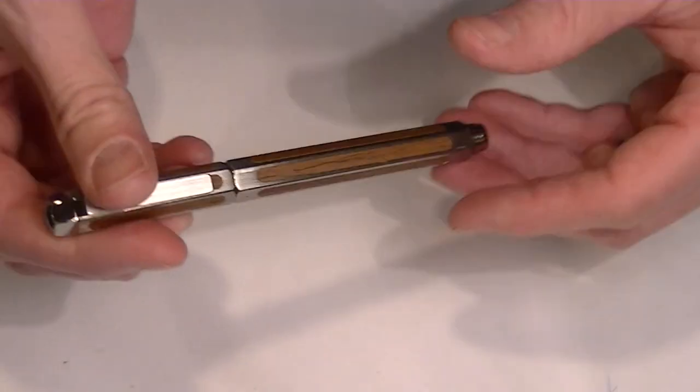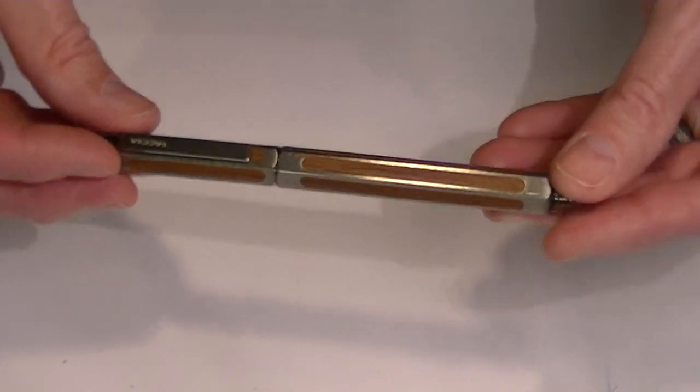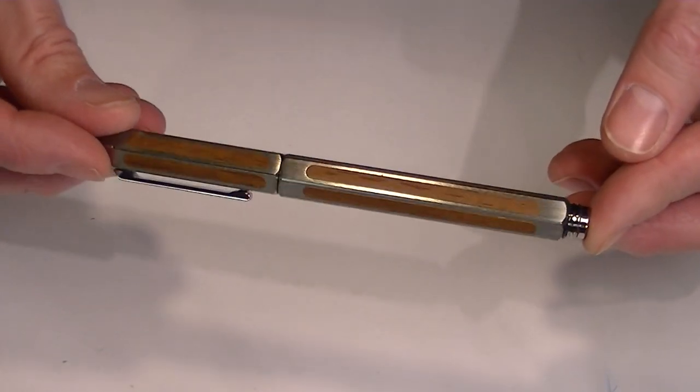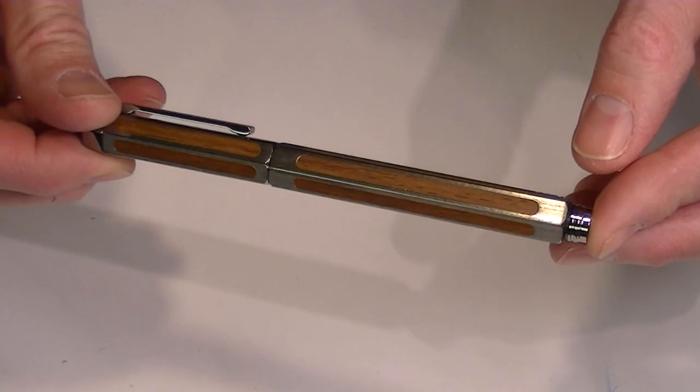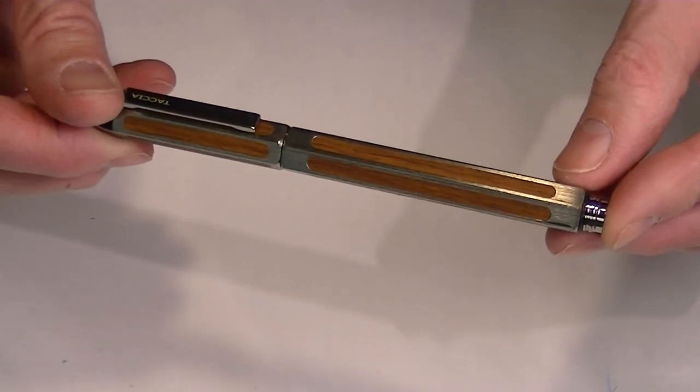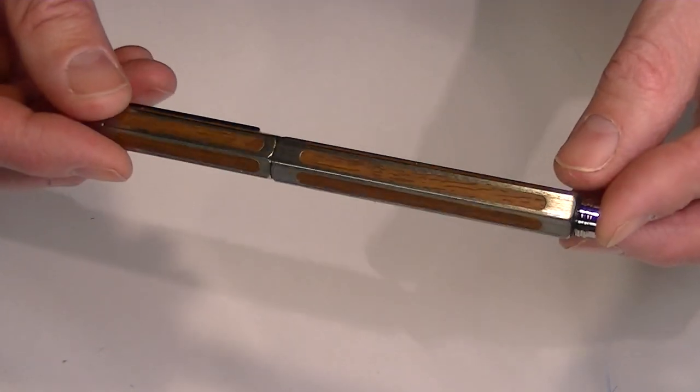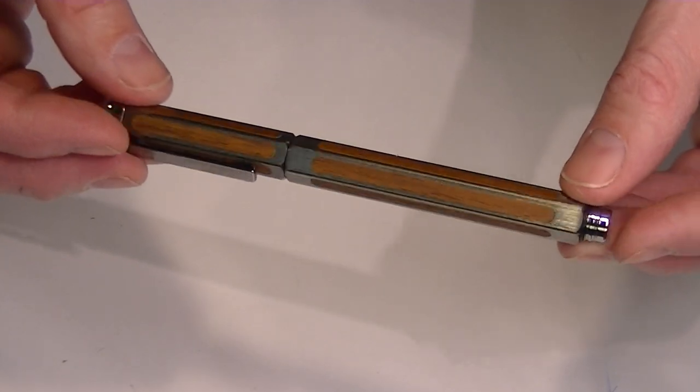This pen is the gunmetal finish. It comes with a six-sided hexagonal shape to the pen with wood inlays. On the gunmetal finish, the wood inlays are a brown color.